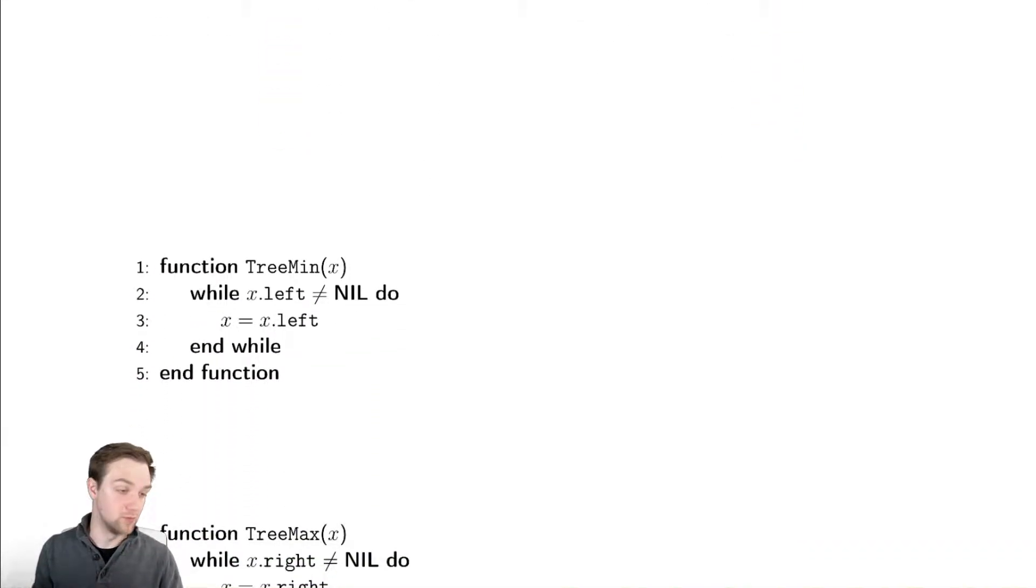Here's tree min. It is really one line if you were clever with your curly braces. We have while the left thing isn't nil, we go left. And then we should probably return that value somewhere. So return x should go there. I apologize for the typo in the code.